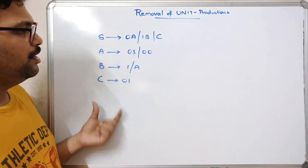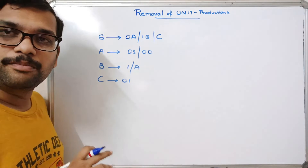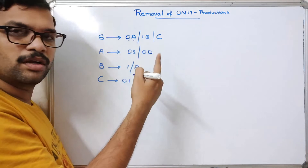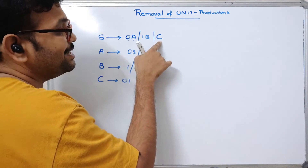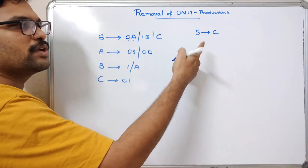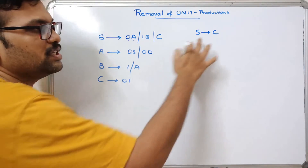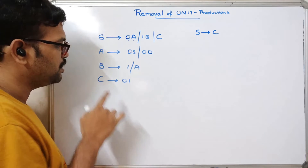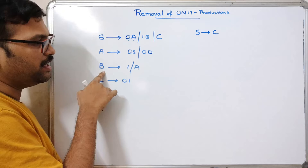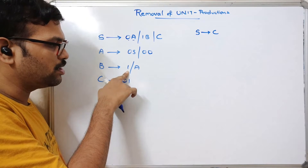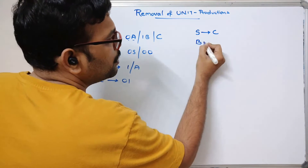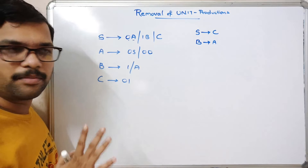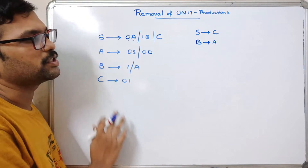Consider this CFG. We first need to find the unit productions. S→0A: both are non-terminals but more than one, so not a unit production. S→1B: more than one variable, not a unit production. S→C: LHS and RHS are both a single non-terminal, so this is a unit production. A→0S and A→00 are not unit productions. B→1 is a terminal, not a unit production. B→A: both LHS and RHS are single non-terminals, so this is a unit production.